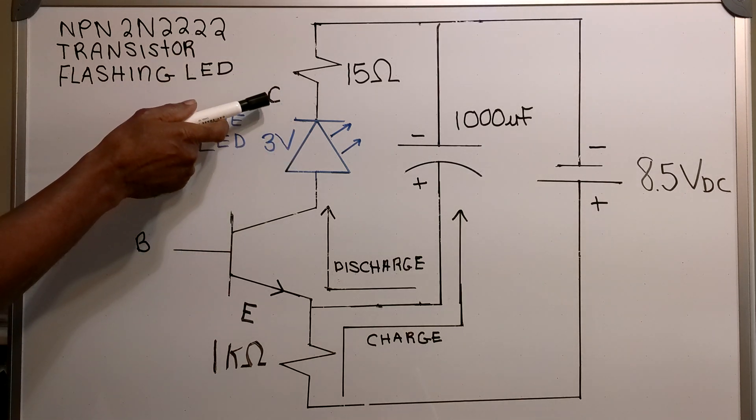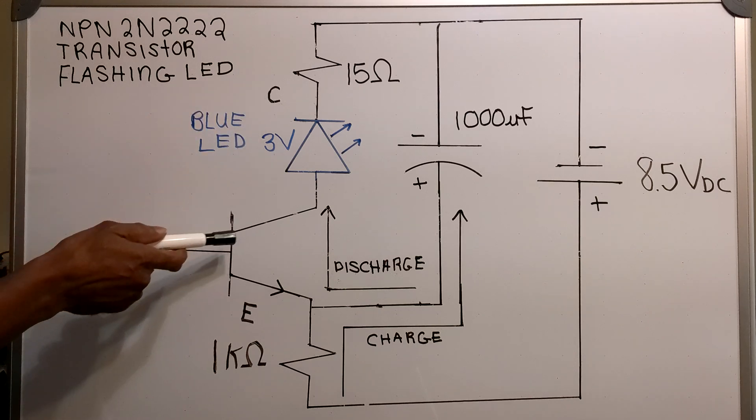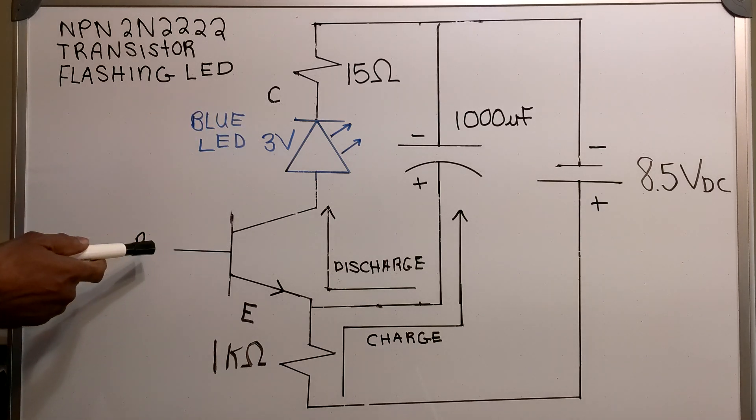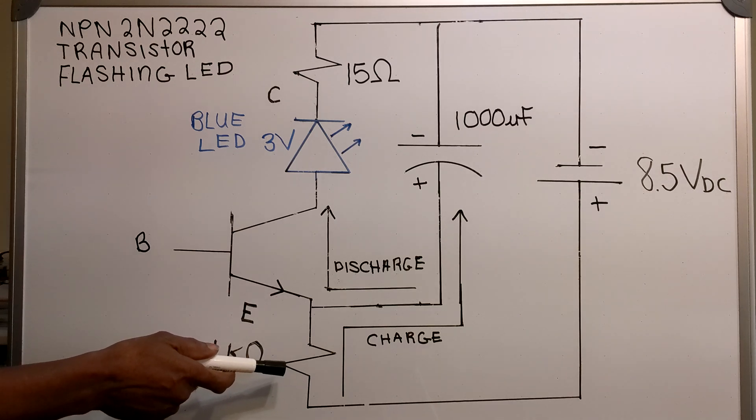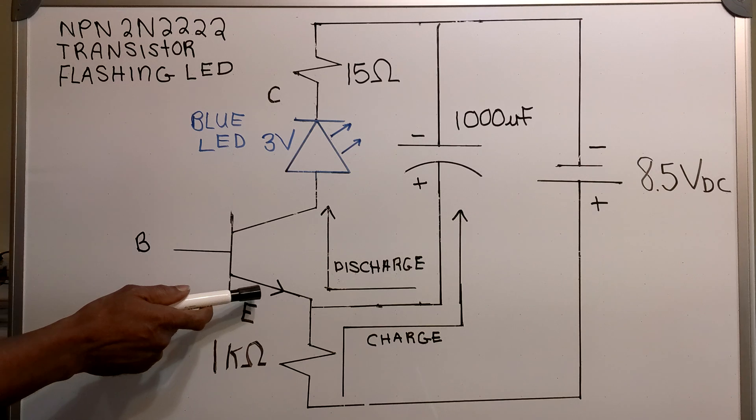This terminal is the base, and this side where I have the 1k ohm resistor is the emitter side.